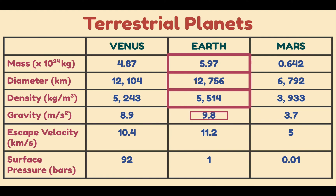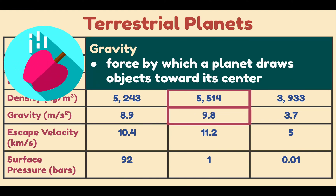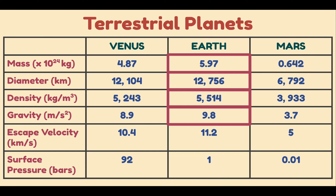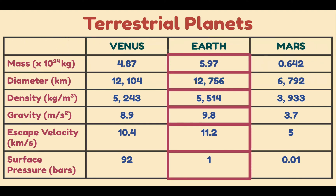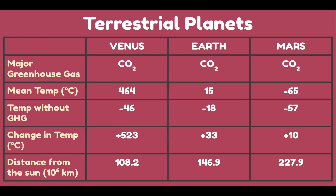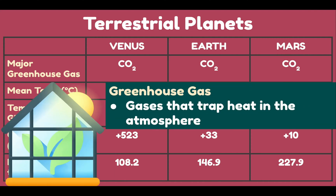Next, we have gravity — a force by which a planet draws objects towards its center. Earth has the greatest gravity at 9.8. Next, we have escape velocity, which is related to gravity. Escape velocity is the minimum speed an object needs to escape a planet's pull of gravity. We also have surface pressure, which is the atmospheric pressure at a location on the surface of the planet, proportional to the mass of air above the location. The major greenhouse gas on these planets is carbon dioxide.